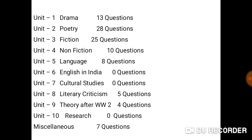There are three units which have no questions: English in India, Culture Studies, and Research, because these three are purely new units. Unit 2 (Poetry) is the biggest unit with 28 questions. Fiction contains 25 questions, Drama 13 questions, and Non-Fiction 10 questions. Apart from this, 8 questions are from Language, 5 from Literary Criticism, 4 from Literary Theory After World War 2, and 7 are miscellaneous.